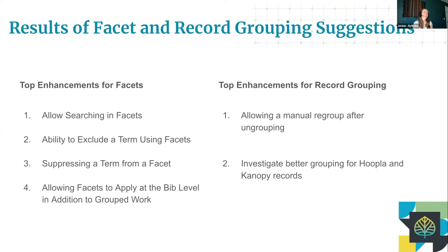We also want to do it in a way that's sustainable, that we can support, and that doesn't create too many problems. The next record grouping item is to investigate better grouping for Hoopla and Canopy records — we hear you, Hoopla and Canopy records are not the best at record grouping and it's causing manual grouping work on your part. When we touch record grouping, our goal is always to make things better, but there's a risk we make things worse, so we'll investigate and try to find a way to do it, but it's possible we get through that and say it's the best it can be given the data we're working with.